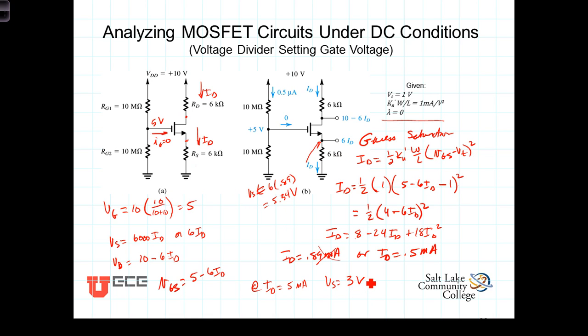With V_S at 3 volts, what does that make V_GS? V_GS would then be V_G which is 5 minus V_S which is 3. That gives us a V_GS of 2 volts.